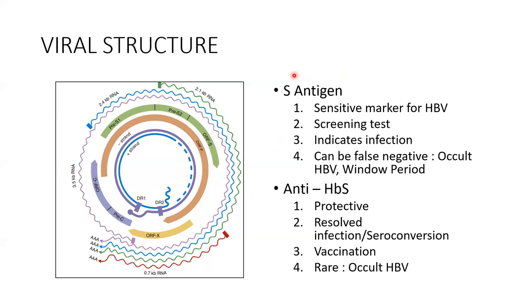The surface antigen (HBsAg) is used for screening. Whenever we have a patient presenting with viral hepatitis or acute jaundice, we ask for a hepatitis B panel. HBsAg is a sensitive marker to detect hepatitis B and a very good screening test — its presence indicates infection. Rarely, it can be falsely negative in two conditions: occult hepatitis B virus infection and the window period.